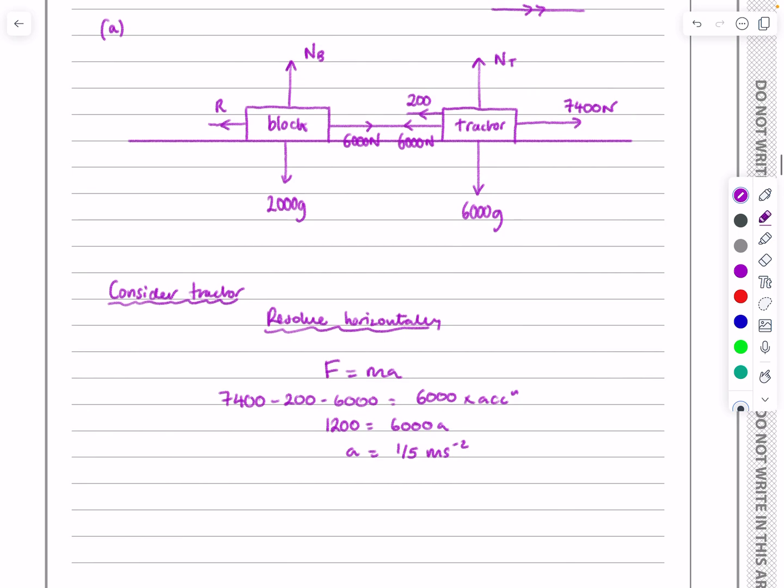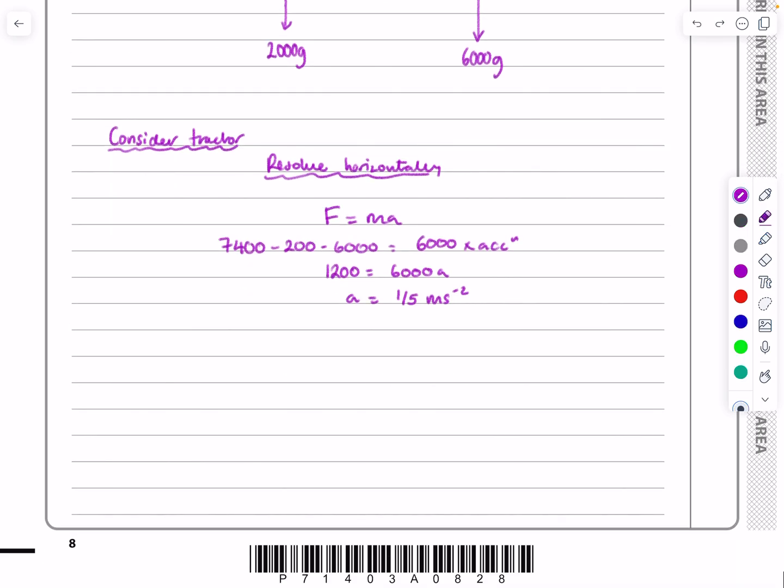So now I've got that. What I can now do is to just look at the block this time. And in the block, I've got 6,000 minus R. Again, here, if we're looking there, F equals MA. 6,000 minus R is equal to mass times acceleration. And the only thing I don't know this time is R. So again, just to make it clear for the examiner.